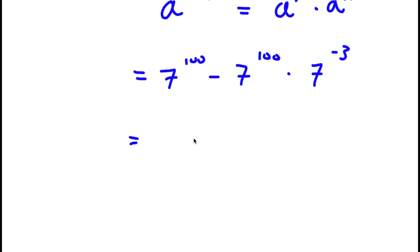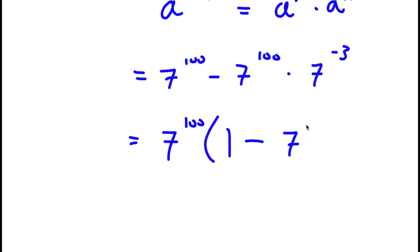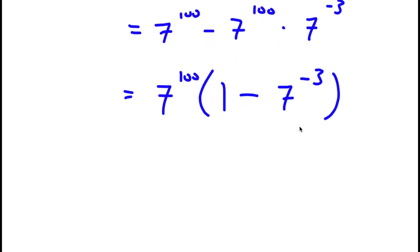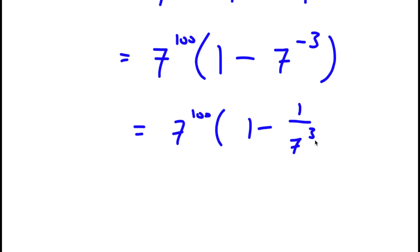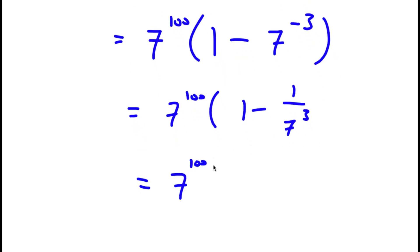Now I factor out 7 to the power of 100 from the expression. The first term divided by 7 to the power of 100 is 1, and the second term divided by 7 to the power of 100 gives 7 to the power of negative 3. So I have 7 to the power of 100 times the quantity 1 minus 7 to the power of negative 3. Now, 7 to the power of negative 3 is the same as 1 over 7 to the power of positive 3, and 7 to the power of 3 is 343. So now I have 7 to the power of 100 times 1 minus 1 over 343.